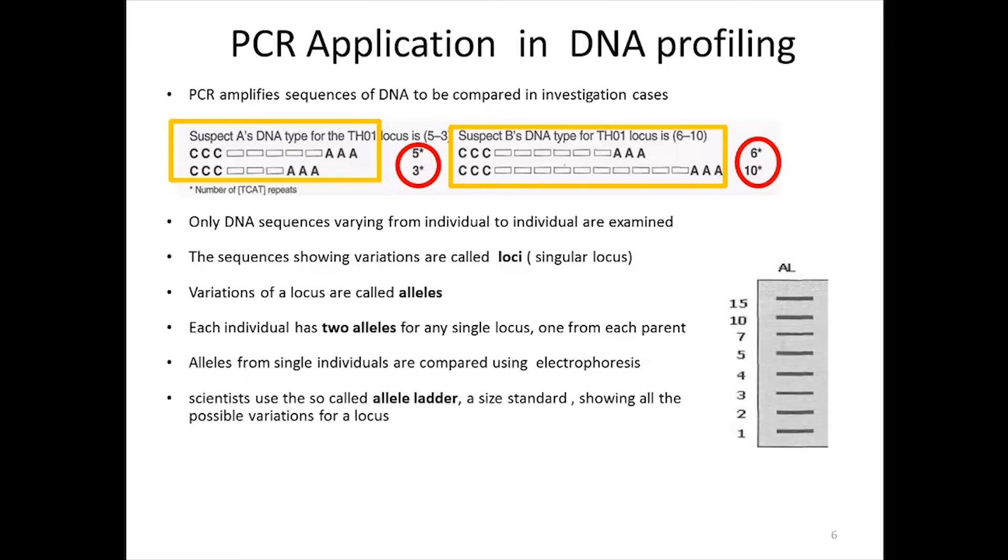To this purpose, scientists use the so-called allele ladder, a size standard or marker showing all the possible values for a locus in the whole population. They can compare the results of the sample they analyze with the corresponding allele ladder to find out matches.